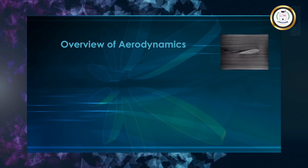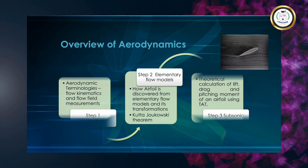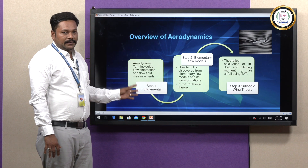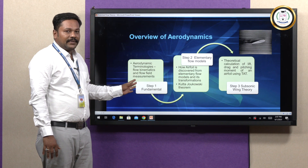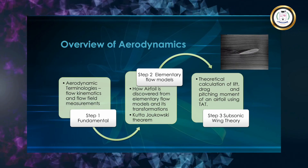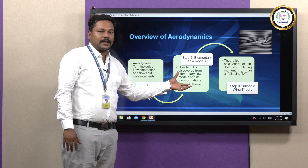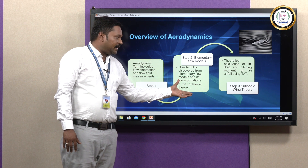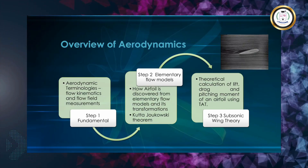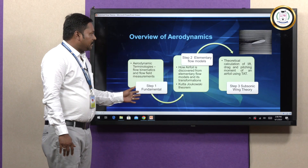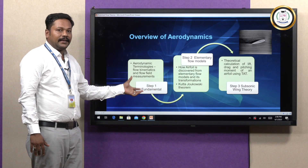We are going to discuss the overview of aerodynamics. Step one is fundamentals, which deals with flow kinematics and elementary models. This elementary models is the absolute potential flow theory which we are going to evaluate here. Then the theoretical calculation of lift, drag, and pitching moment using thin airfoil theory, that is the subsonic wing theory.